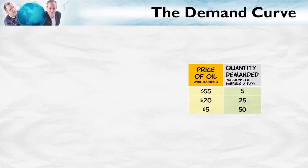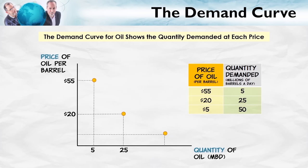Here are some hypothetical numbers in a table which illustrate the idea of the demand curve for oil. Suppose that at a price of oil of $55 per barrel, the quantity of oil demanded would be 5 million barrels of oil per day. At a lower price, the quantity of oil demanded is going to be greater. For example, at a price of $5 a barrel, the quantity of oil demanded would be 50 million barrels a day. We can turn this table into a diagram — let's put the price of oil per barrel on the vertical axis, and the quantity of oil demanded on the horizontal axis.